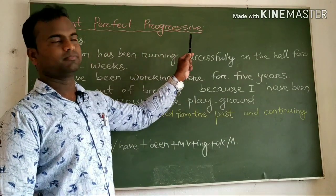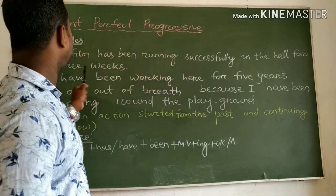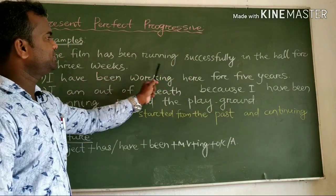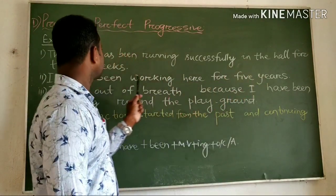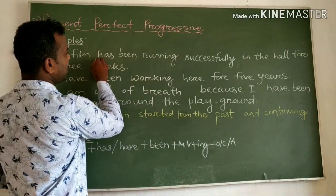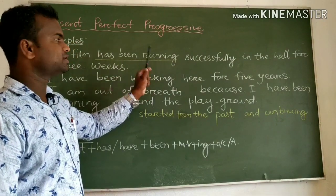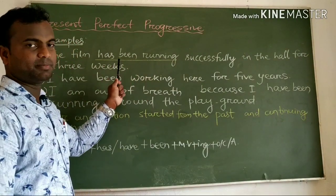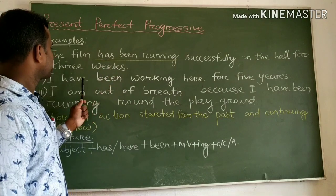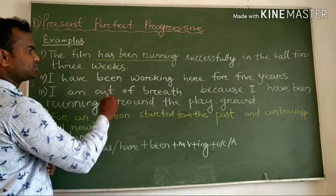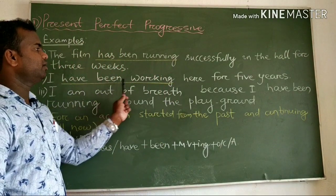And last but not least, present perfect progressive. Example: The film has been running successfully in the hall for three weeks. Another example: I have been working here for five years. The structure uses has/have been plus the main verb with -ing.